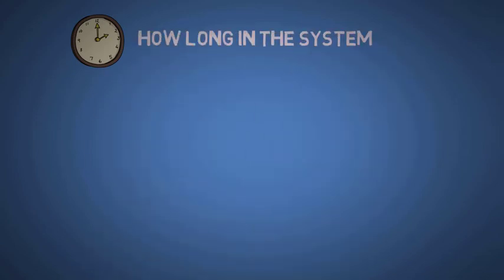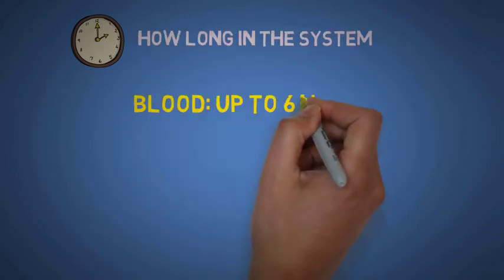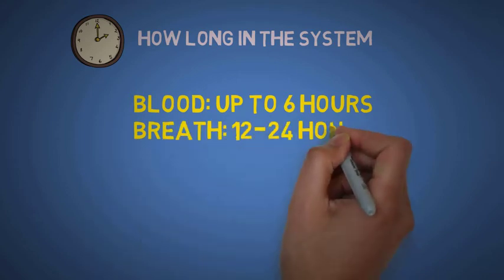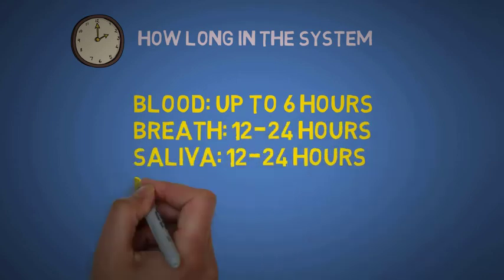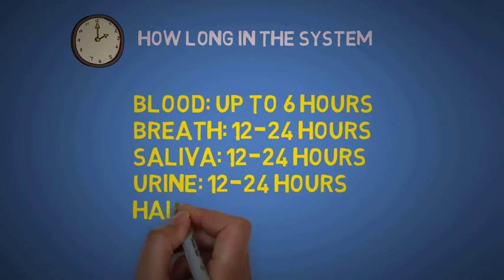So how long does the alcohol last in the system? It differs from system to system. Blood 6 hours, breath 12 to 24 hours, saliva 12 to 24, urine 12 to 24, and hair about 90 days, three months it can last in the hair.